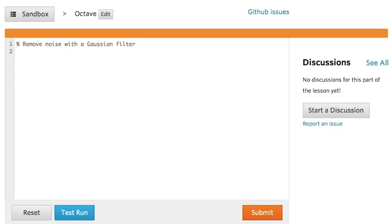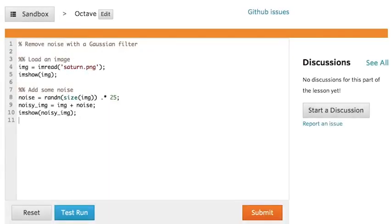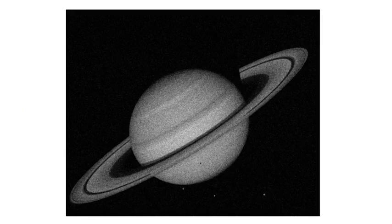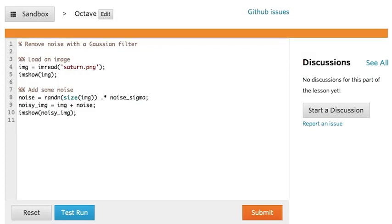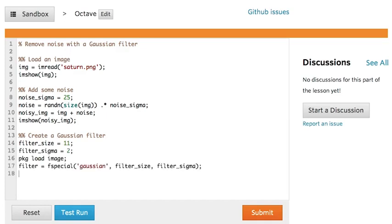So we talked about removing noise using a filter. Let's see how well that really works. Let us load a perfectly good image, spoil it by adding some noise. I should really name this sigma to avoid confusion later. Finally, we know how to create a Gaussian filter. We define a size and a sigma, and then we can use the fspecial function from the image package. So load up the package first, and then create the filter.